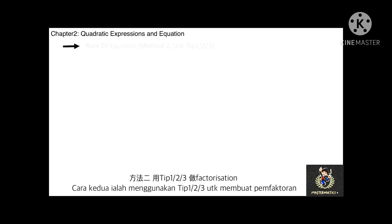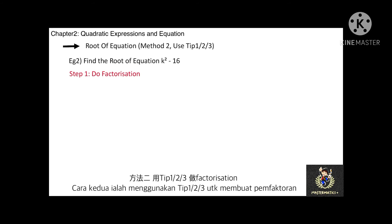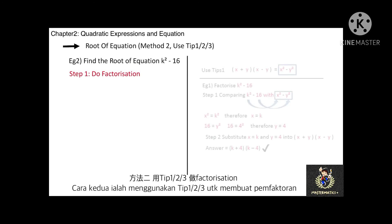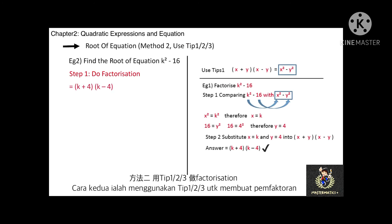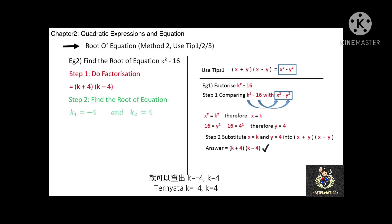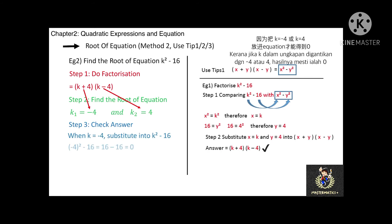Let's see another example: find the roots of k squared minus 16. Step 1: factorize — the equation is similar to Tips 1, so using Tips 1 the factorization equals (k plus 4)(k minus 4). Step 2: the roots are k equals negative 4 or k equals positive 4, as these satisfy the equation equal to 0. Step 3: check — substituting k equals negative 4 and k equals 4 into k squared minus 16 both result in 0, confirming the roots are correct.